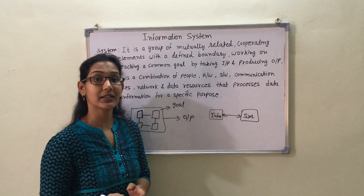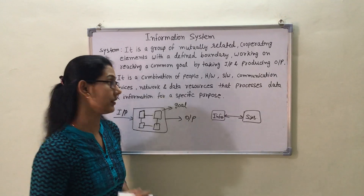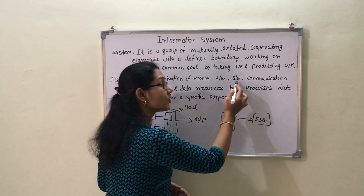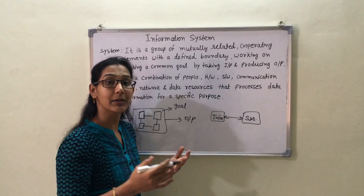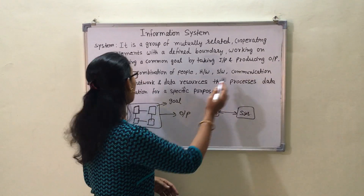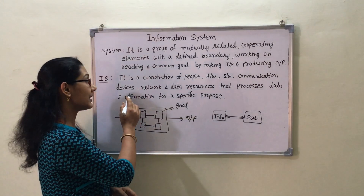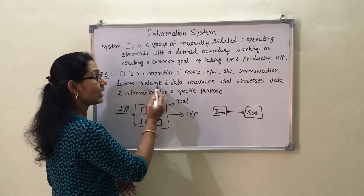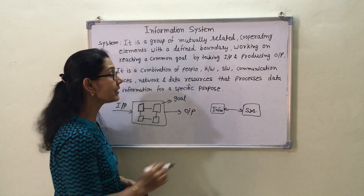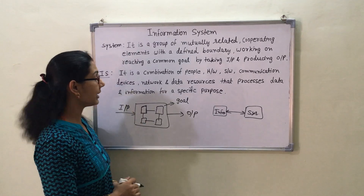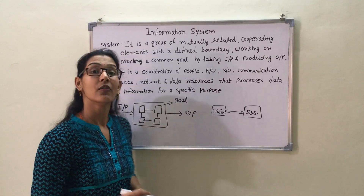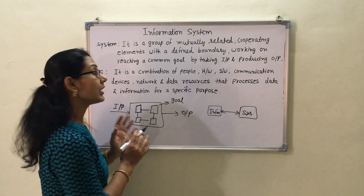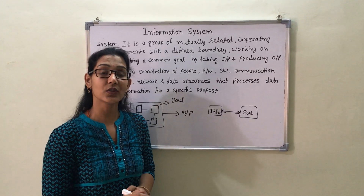The general definition of an information system is: it is a combination of people — like IT specialists and users — hardware like machines and media, software like programs and procedures, communication devices like hubs and repeaters, and network and data resources.